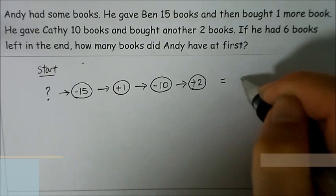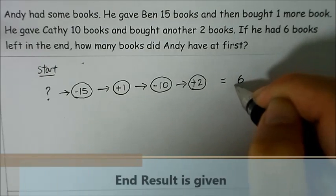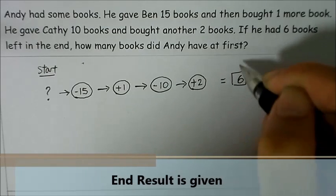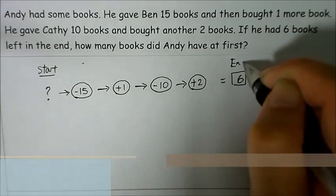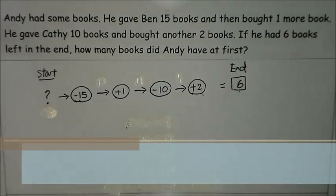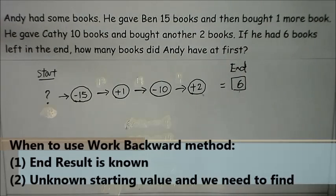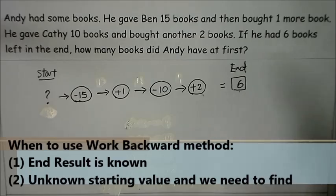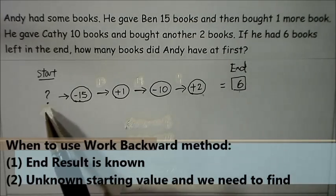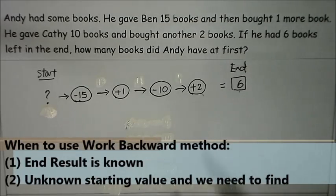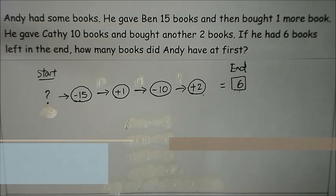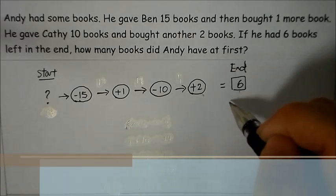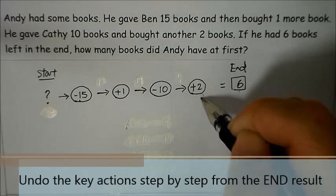Now we have the end result which is six and the unknown at the start, so we can use the working backwards method to solve this question. So from here we have to start working backwards.